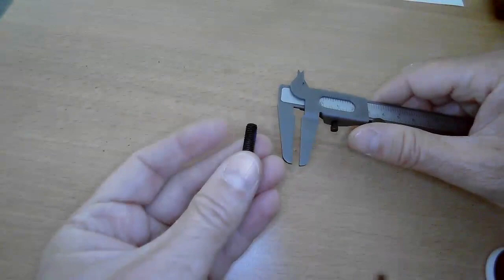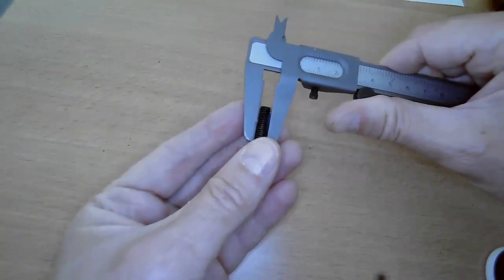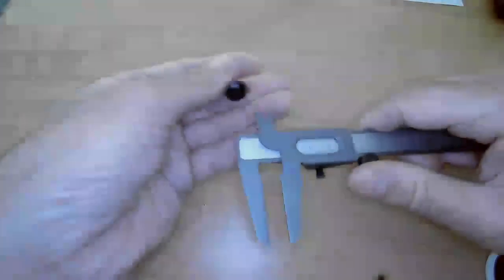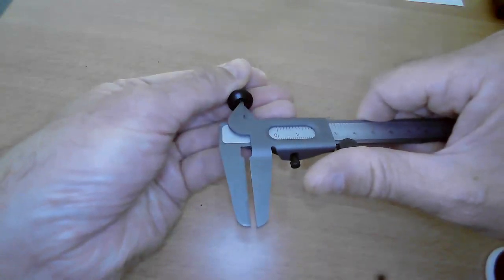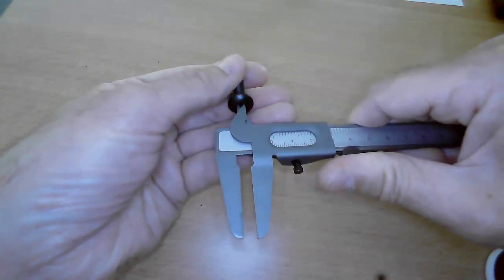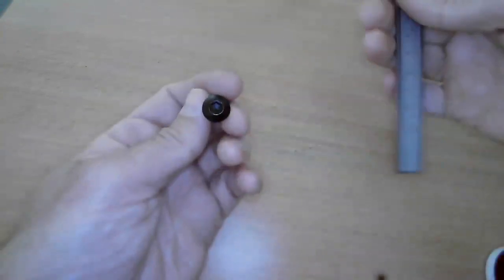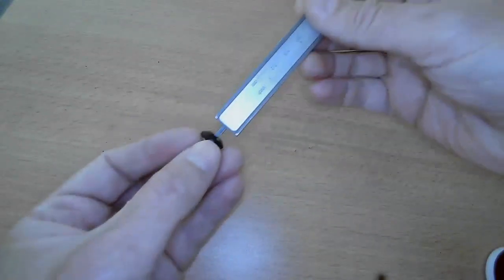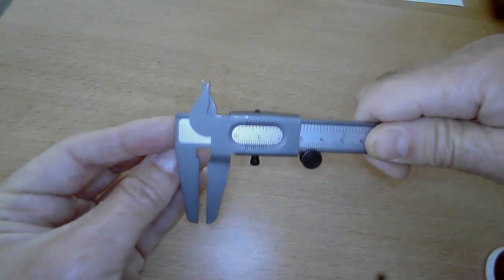and the depth rod. To measure the diameter of this bolt, we use the external jaws and read off the measurement. To measure the internal diameter of a hole, use the internal jaws. To measure the depth of a hole, use the depth rod and read off from the scale.